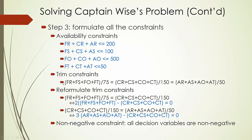This trim constraint is very hard to use directly in Excel, so we reformulate it in linear format. The constraint that the weight ratio of the forward hold equals the weight ratio of the center hold becomes: 2·(FR+FS+FO+FT) − (CR+CS+CO+CT) = 0.